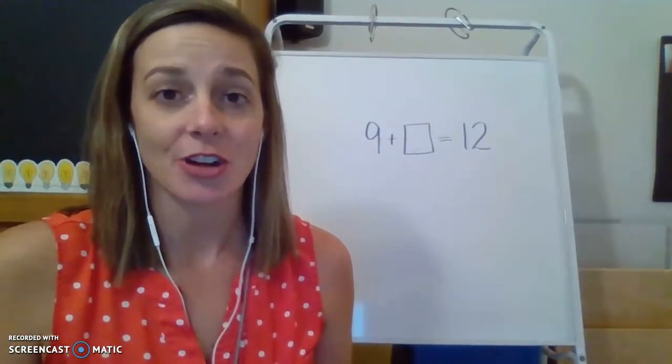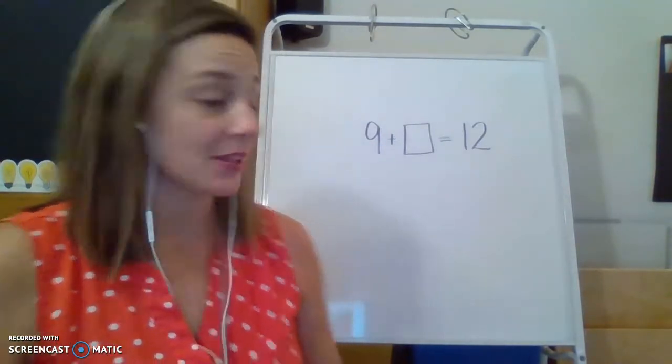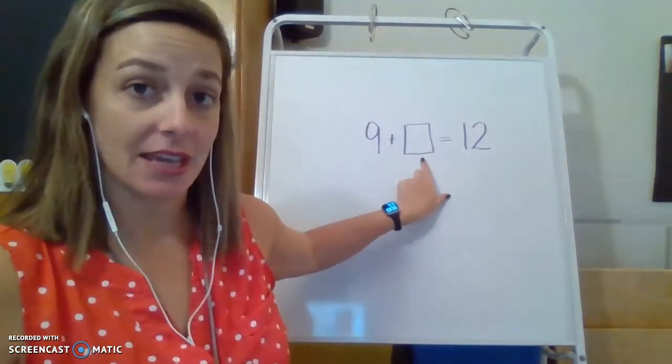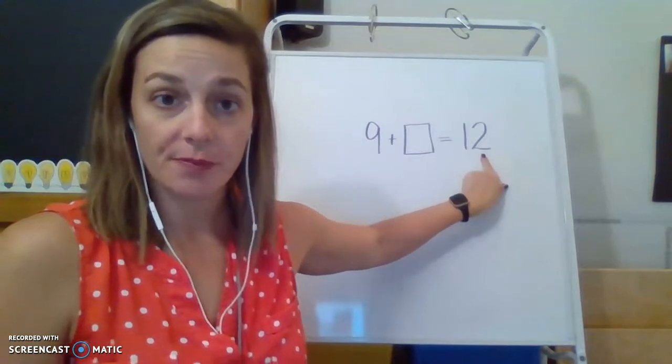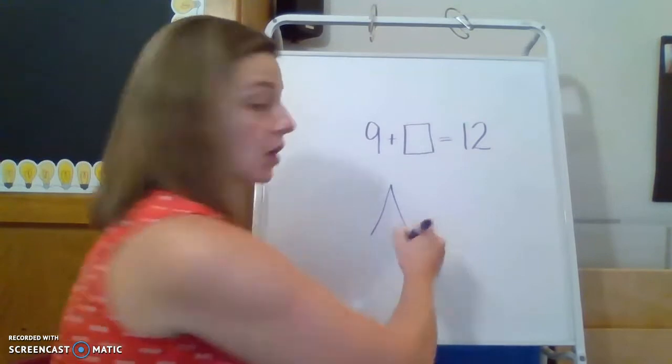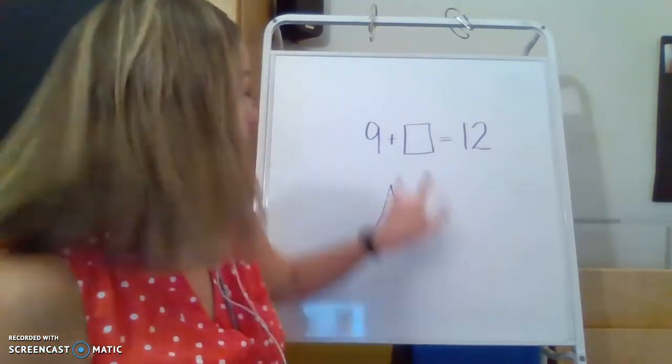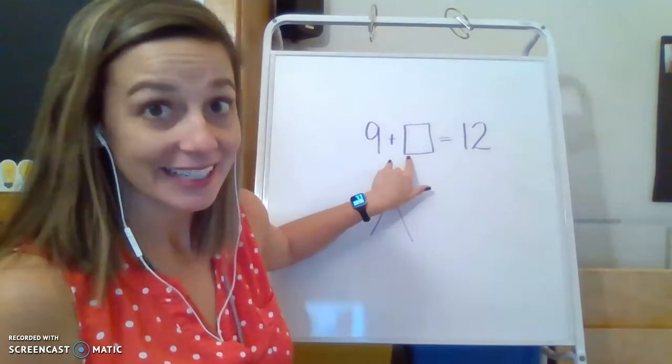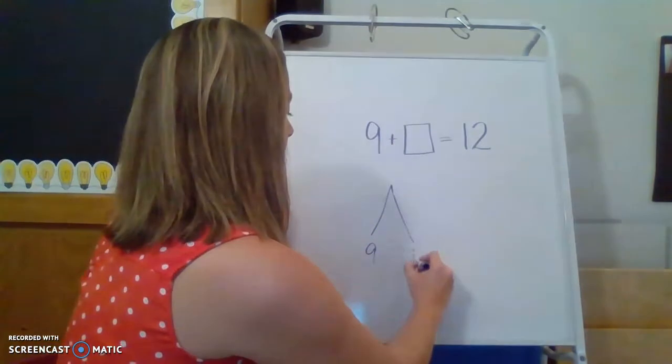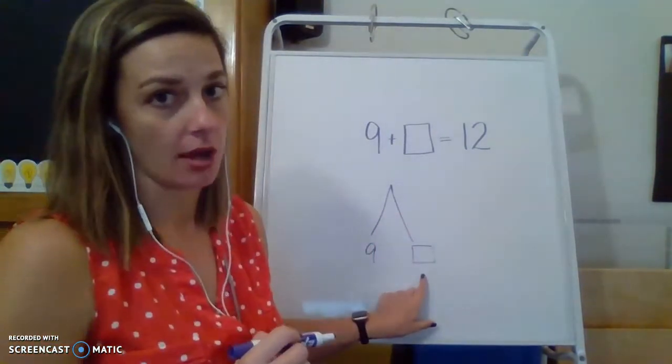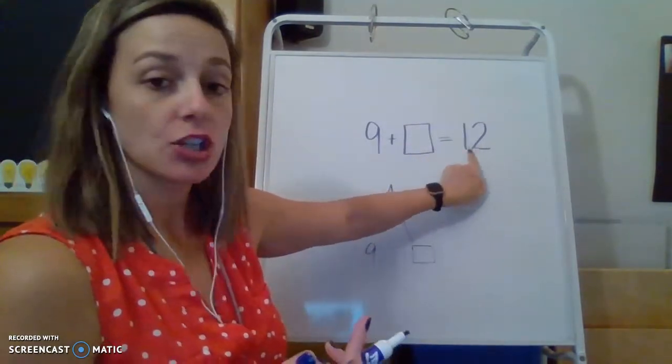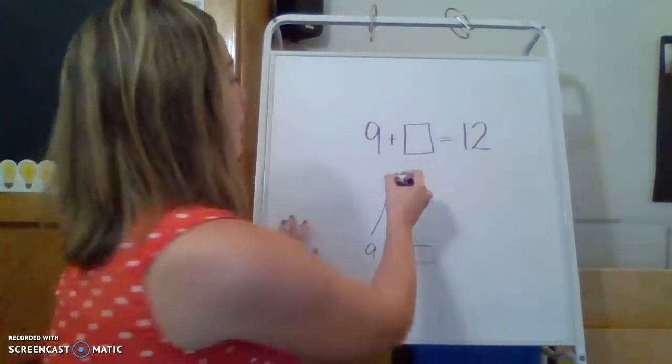Go ahead and get started with our first equation today. The equation is here on the board behind me: nine plus something is equal to 12. From what I know about addition, if I were to put these numbers on a math mountain, the two numbers that I am adding together are the addends. I know nine, but I also have this mystery number in the box. I don't know what it is yet, and they add up to give me my total or my sum of 12.